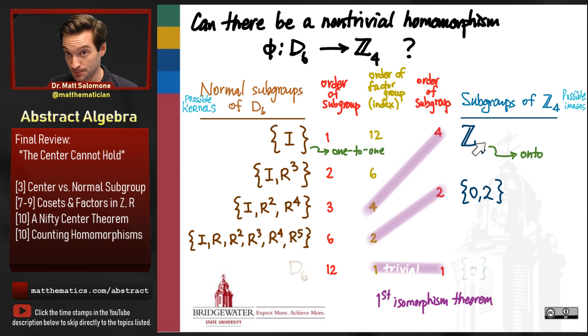But can it be onto? So can I have an onto homomorphism from D6 to Z4? If I did, that means that its image would be all of Z4, and therefore that the quotient, the factor group of D6 by this normal subgroup would have to be isomorphic to this image, according to the first isomorphism theorem. Can that be the case? And I'm going to argue the answer is no, because if the image is isomorphic to Z4, it means that the image is a cyclic group over here on the right-hand side.